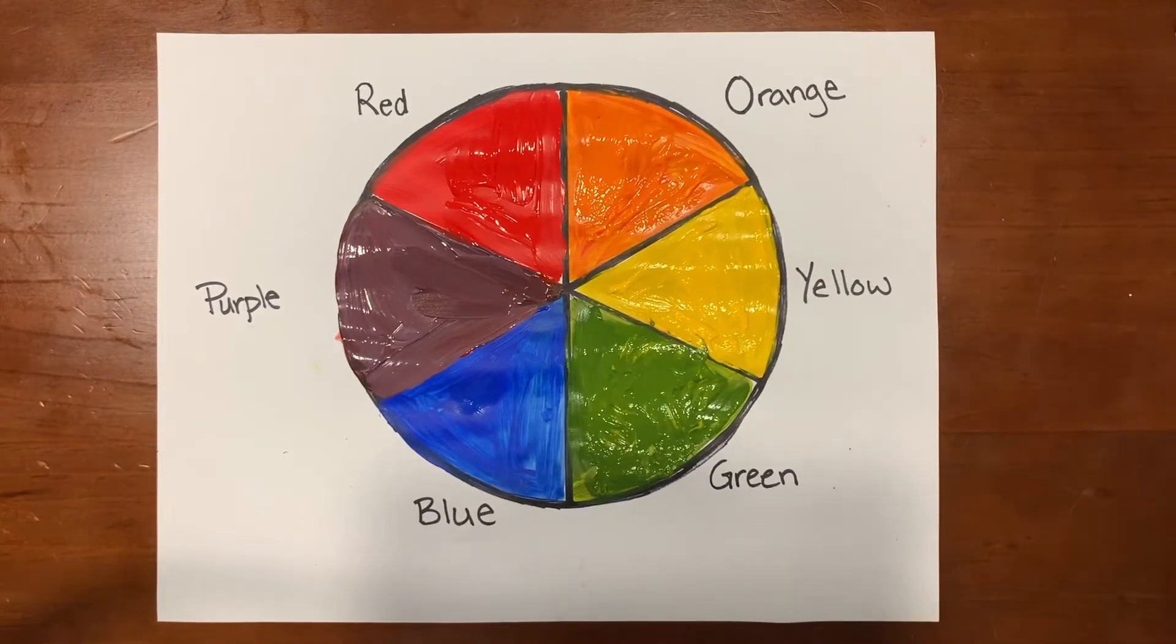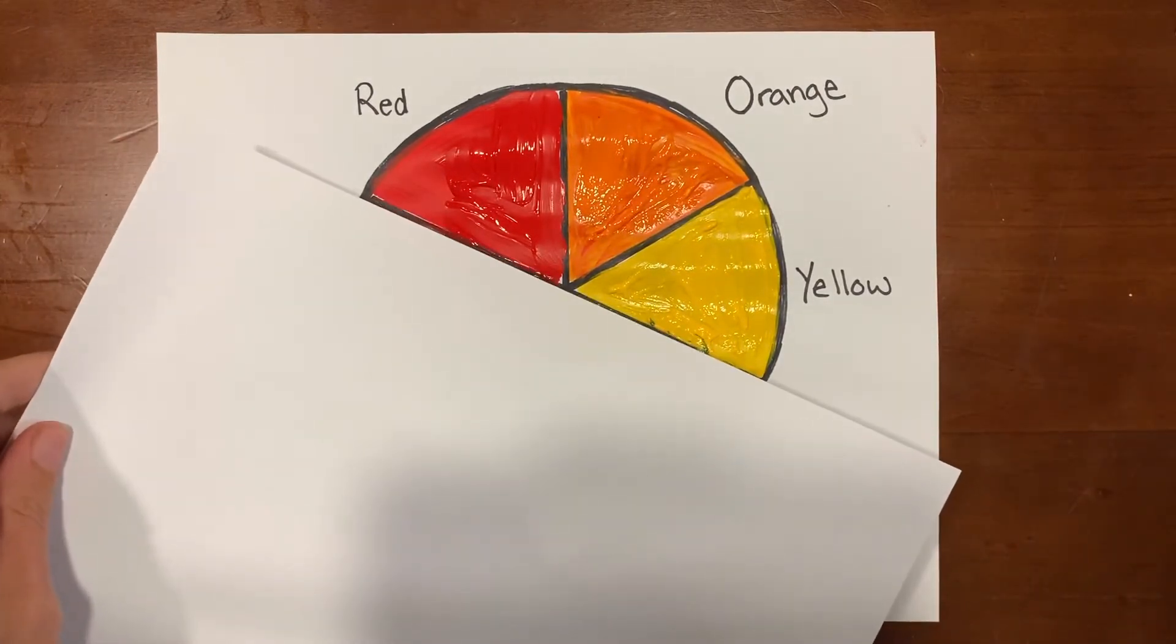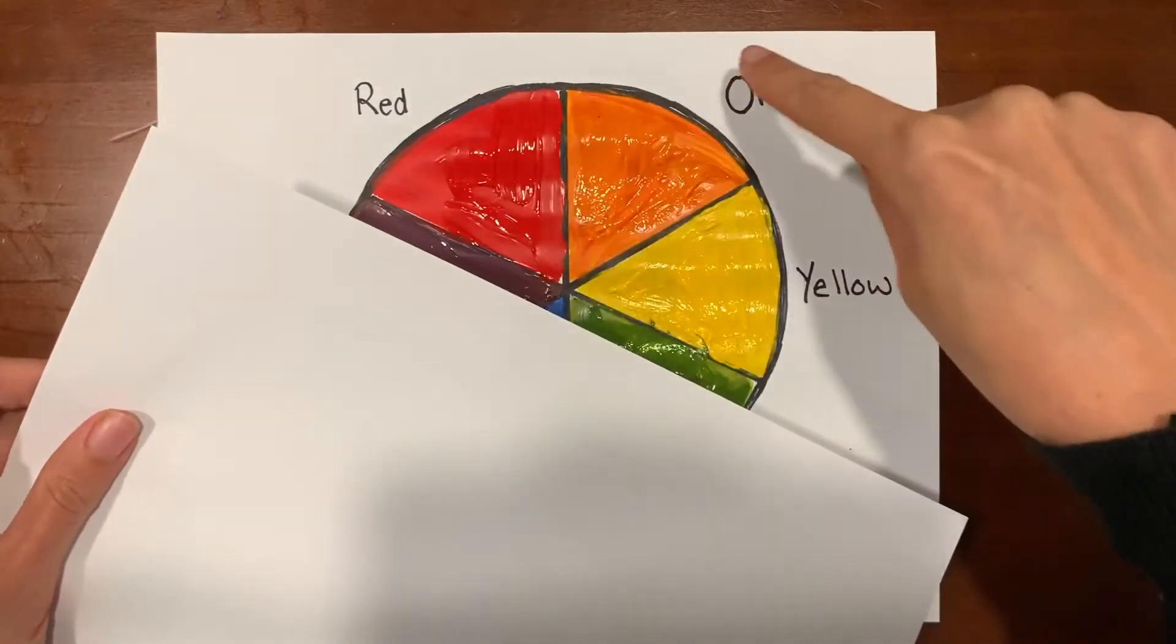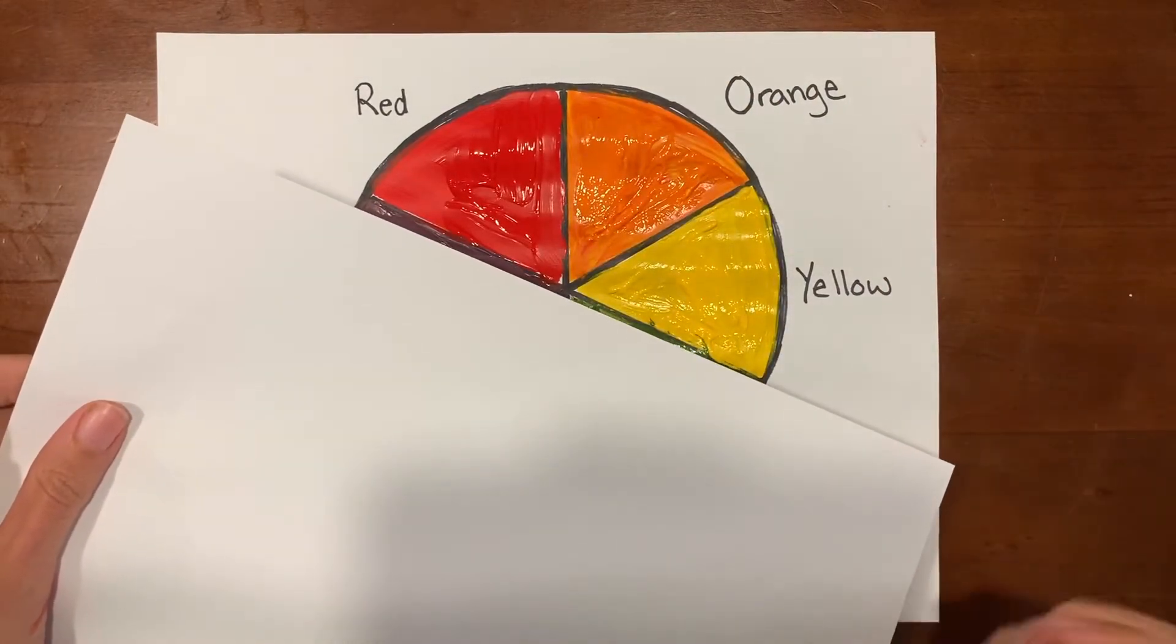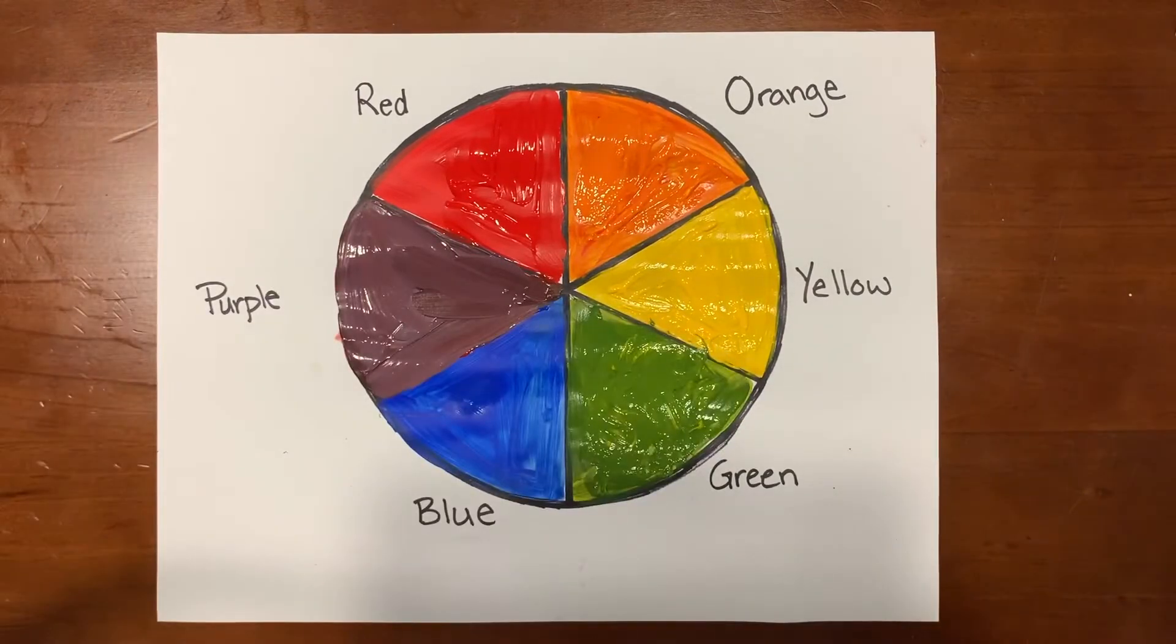This color wheel can be further divided into warm and cool colors. Red, orange, and yellow are warm colors because they make us feel warm and they remind us of things like the sun and fire.